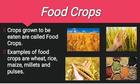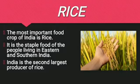Crops are divided into two categories. First, let us begin with food crops. Crops grown to be eaten are called food crops. Examples of food crops are wheat, rice, millet, and pulses.